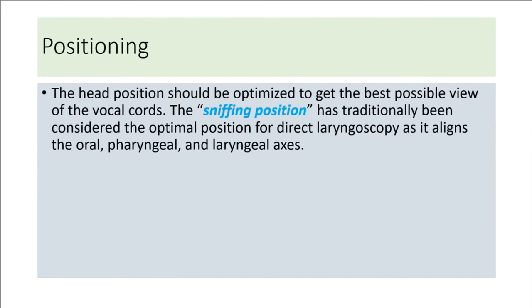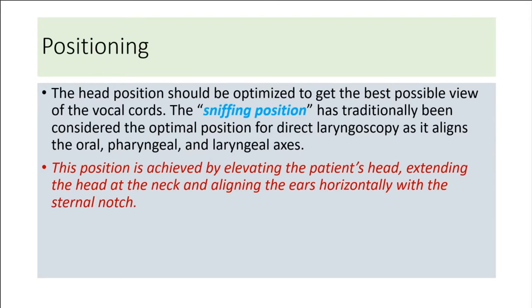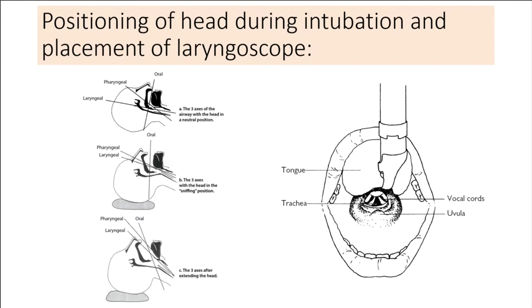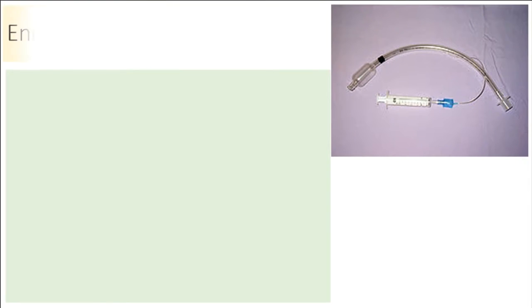The head position should be optimized to get the best possible view of the vocal cords. The sniffing position has traditionally been considered the optimal position for direct laryngoscopy as it aligns the oral, pharyngeal, and laryngeal axes. This position is achieved by elevating the patient's head, extending the head at the neck, and aligning the ears horizontally with the sternal notch. In morbidly obese patients, rolls may be utilized to elevate the head until the external auditory meatus aligns with the sternal notch.